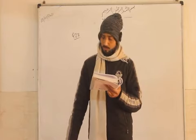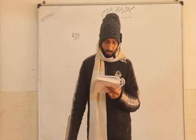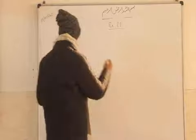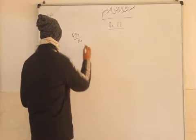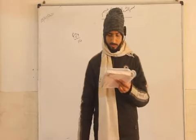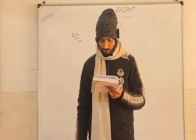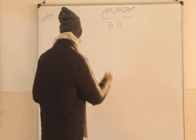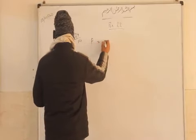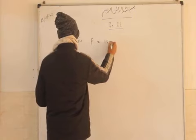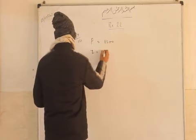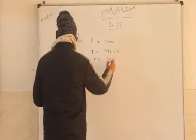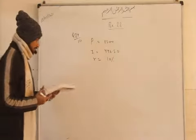Now question number 24, part one — this is an important question. In what time will ₹300 yield ₹496.50 as compound interest at 10% per annum compounded annually? The rate of interest is 10% per annum compounded annually, and we have to calculate the time.